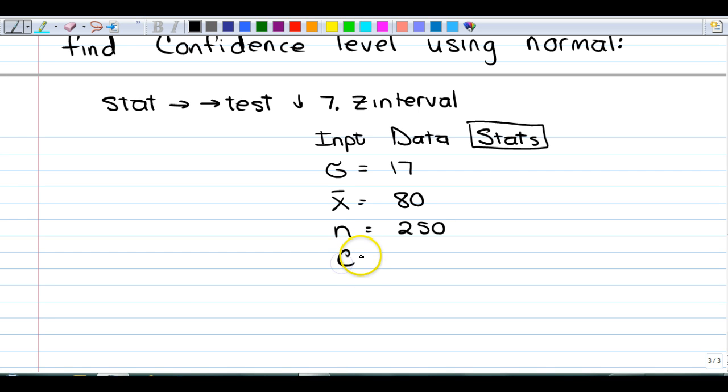Well, we need a confidence level. Let's say our confidence level is 92%, 0.92. And then we enter on calculate. My output tells me my confidence level goes from 78.118 to 81.882.